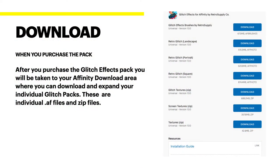First thing you do is download the pack when you purchase it. Go to the Affinity Store and purchase the pack. You'll get a download area where you have to log in to your Affinity account. The packs will be waiting for you to download them, and they're there whenever you want them again — just go back and download them to your computer.